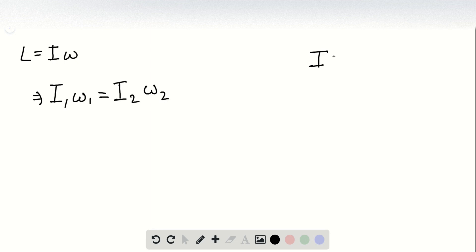And we know for a solid sphere, I is 2 over 5 m r squared. Now we have r1 for I1 and r2 will be for I2.